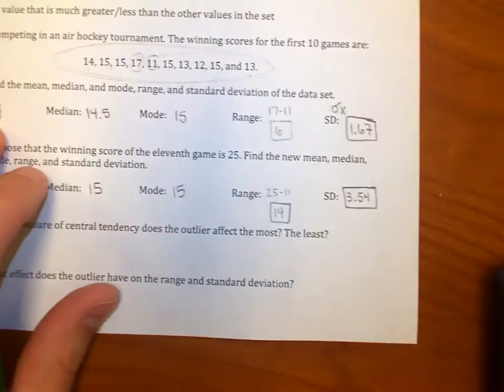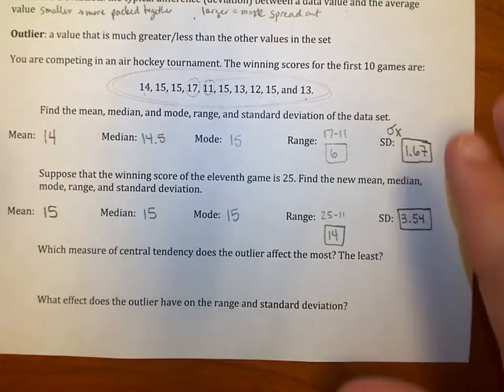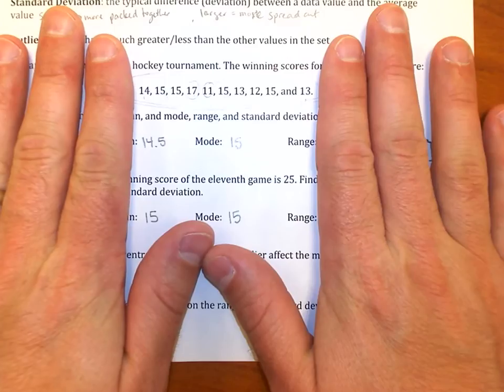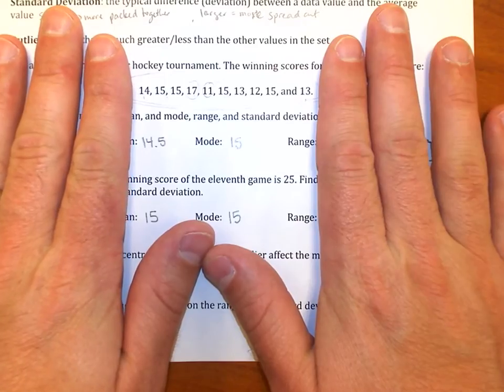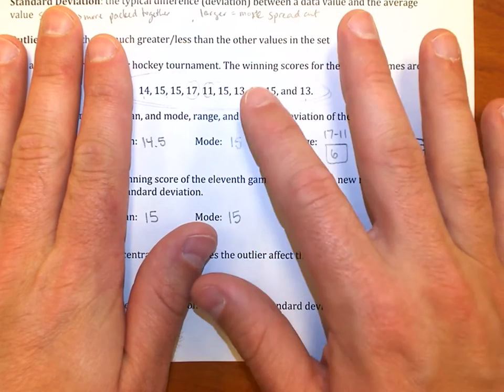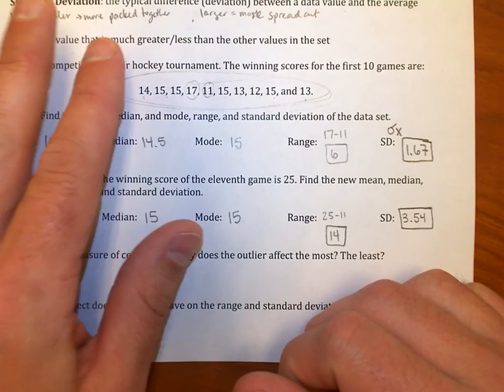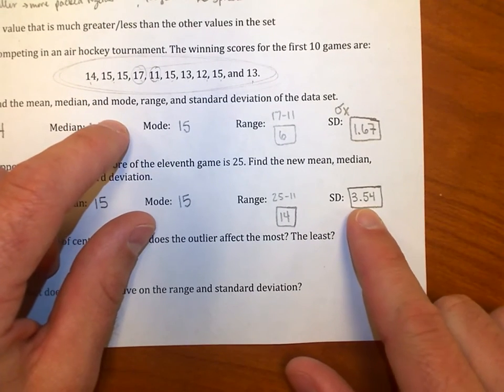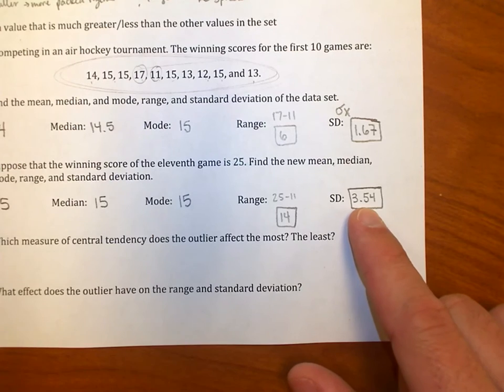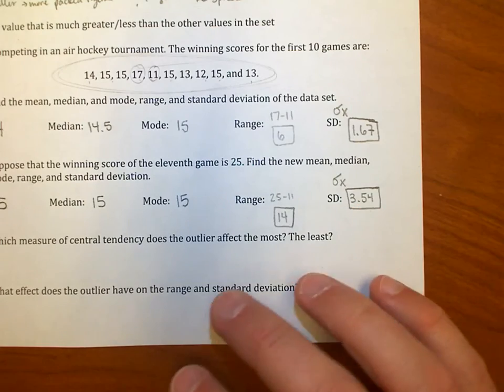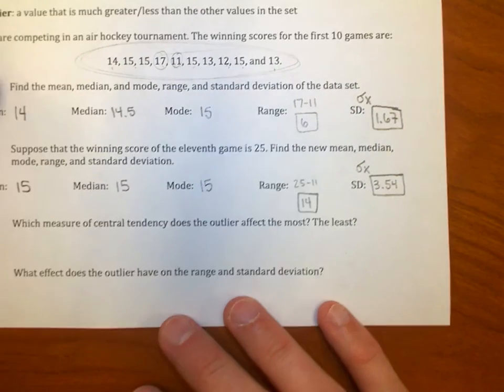Now, why did it jump up? It's because before, whenever I was looking at just these 10 values, those values were all pretty close together. I mean 11 to 17, that's not a very big spread there. When I throw the 25 in, all of a sudden I've got this one that's pulling the average way up. And the values are way more spread out now. So we see the standard deviation increased. Mainly though, I just want you to be able to put these in your calculator and be able to get them out of the calculator, what these actual values are.